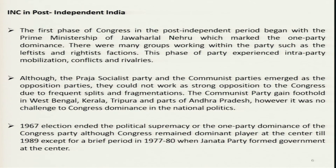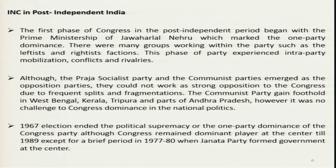There were Praja Socialist Party and Communist Party, which emerged as strong opposition parties. However, they could not work as a strong opposition to Congress because of frequent splits and fragmentation within those parties. Communist Party gained a foothold in West Bengal, Kerala, Tripura and parts of Andhra Pradesh. However, it was no challenge to Congress dominance in national politics. If we compare the Communist Party and Socialist Party of the 1950s and 60s, they had a stronger position then, but because of splits and fragmentation, they could not present themselves as a strong alternative.